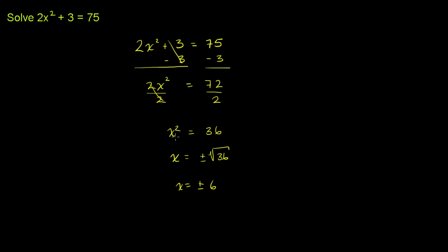And remember here, if something squared is equal to 36, that something could be the negative version or the positive version. It could be the principal root, or it could be the negative root. Both negative 6 squared is 36, and positive 6 squared is 36. So both of these work.